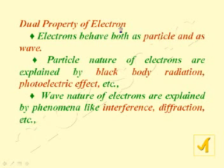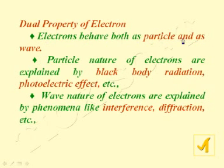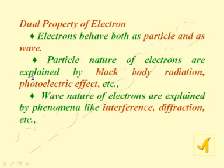The dual property of electron means electrons behave both as a particle as well as a wave. This is called the dual property of electron. The particle character of electron is explained by black body radiation and the photoelectric effect.